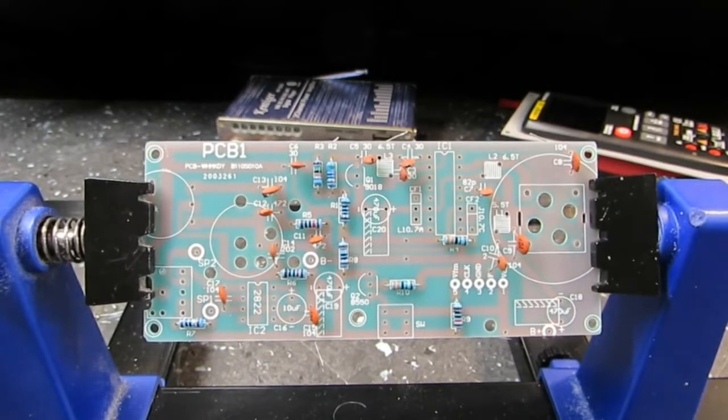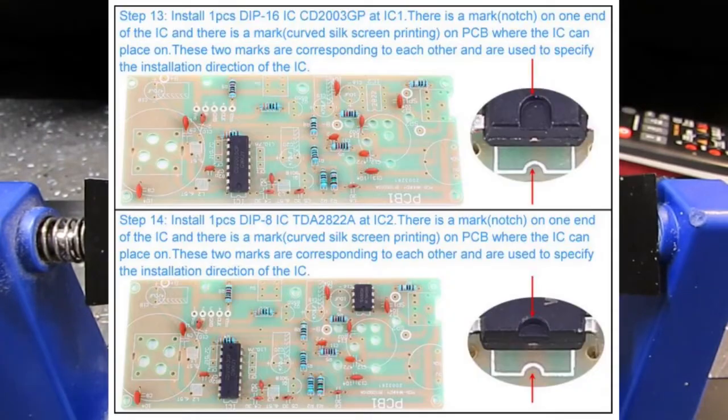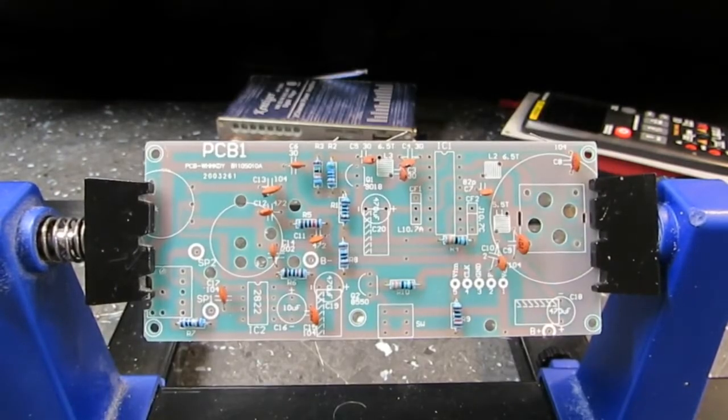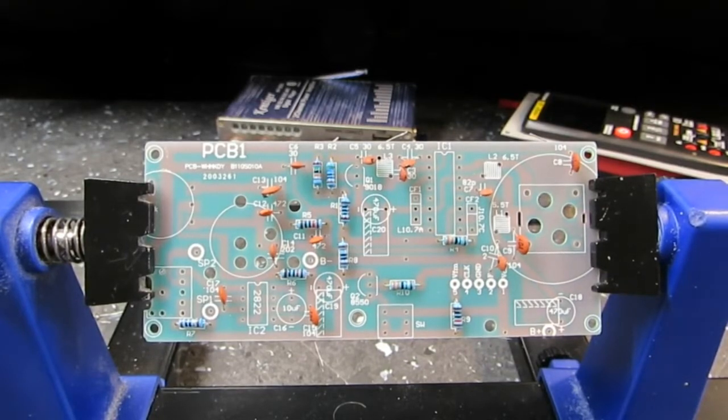Step twelve is to install five pieces of .1 microfarad, 104 ceramic capacitors, C8, C9, C13, C15 and C17. We start over here at this one. That's C8. I believe this is C9 down here. And over here is C13 and C12. And down here is C15. And C17 is over here. Those are all of the ceramic capacitors installed.